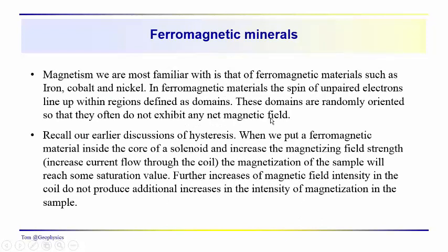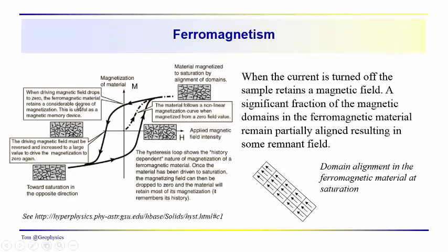The kind of magnetism we're most familiar with — the magnets hanging on your refrigerator — these are ferromagnetic materials: iron, nickel, cobalt. The domains are generally randomly oriented and might not exhibit any net magnetic field. But when we subject these ferromagnetic materials to a magnetizing field, just remember back to the hysteresis loop that we talked about earlier on.